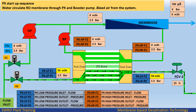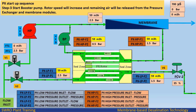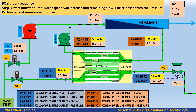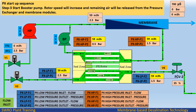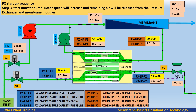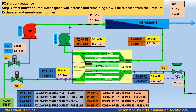Water circulates through the RO membrane, PX, and booster pump. Bleed air from the system. PX startup sequence, step 3: start the booster pump.